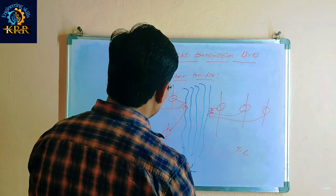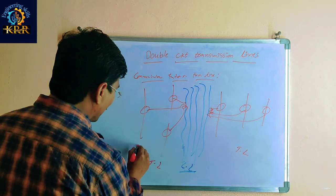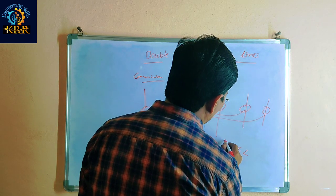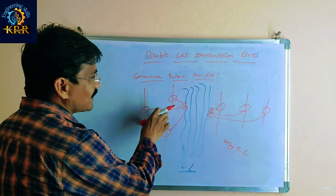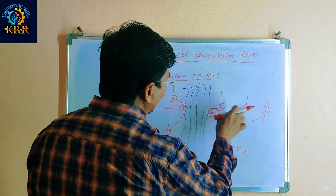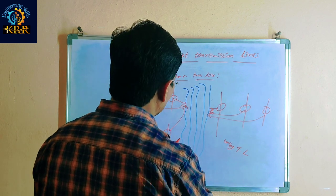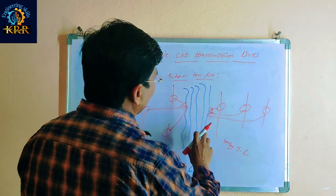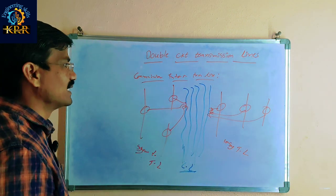In this transmission line, two types of transmission lines are there. This is the symmetrical transmission line, and here is the unsymmetrical transmission line. In the symmetrical transmission line, what will happen? If it is the unsymmetrical line, exactly what is happening inside — interference with the communication lines — we are discussing.